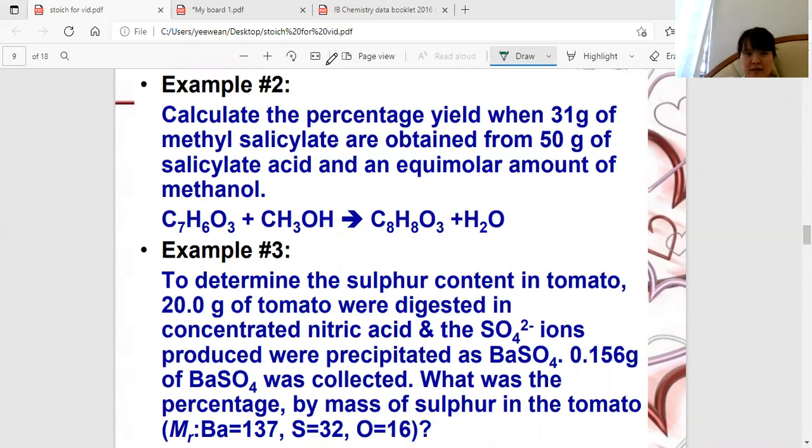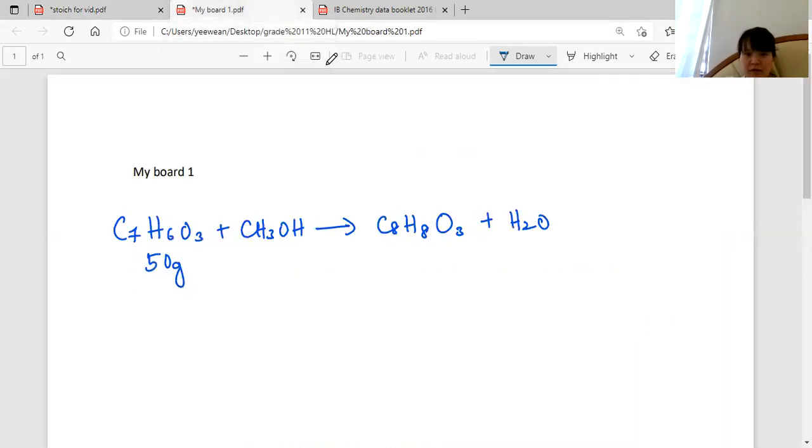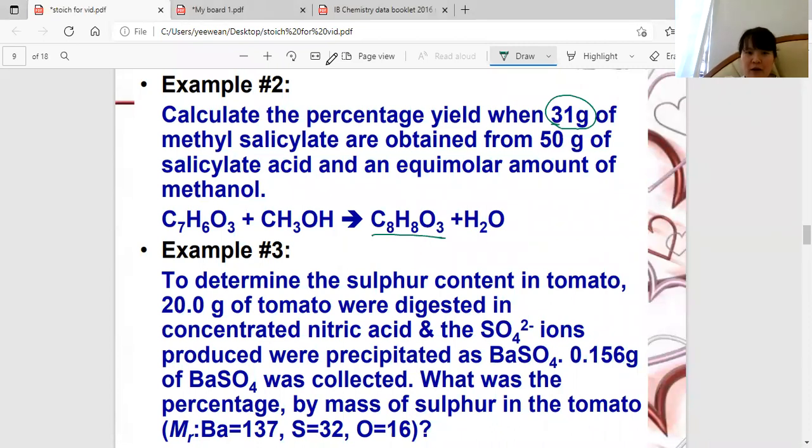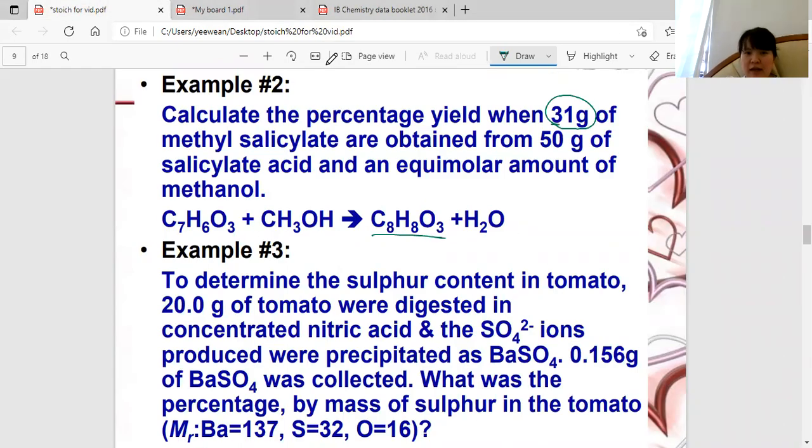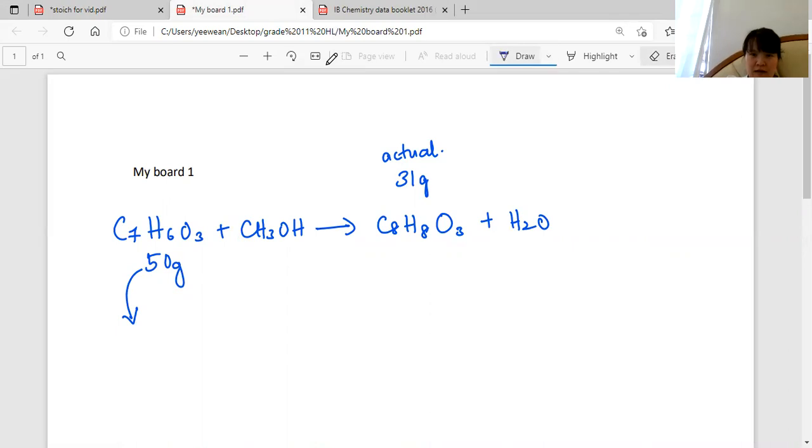An example about percentage of yields. Let's get the information from this and I'll pick up what I need here. We've got 31 grams of methyl salicylate which are obtained. Obtain means it's the product. So 31 grams is the actual. It's obtained from 50 grams of salicylate acid. So I put that here. I need to convert that to mole later. Equimolar amount of methanol, meaning I have the same amount of that, which is just nice because the ratio, as we can see in this equation here, it is 1 to 1. So when they put it in equimolar, just nice. Let's go to the working here. Same story as just now. So you get the mole here. This mole will be equal to this mole. And for mole, I'm going to convert it back to mass. Then I'll use that formula to calculate what is the percentage of yields.